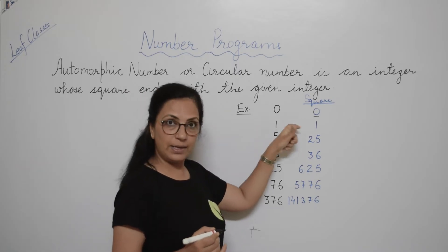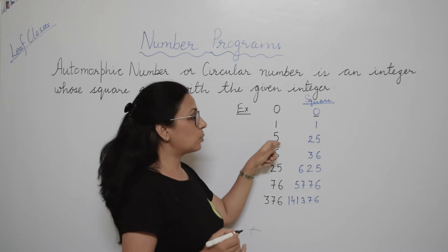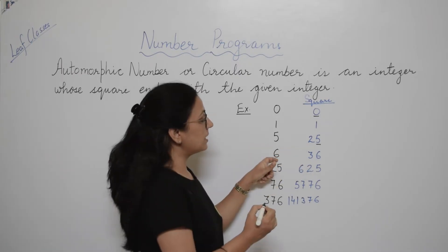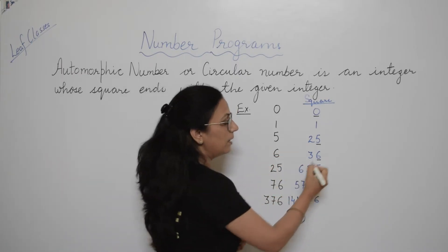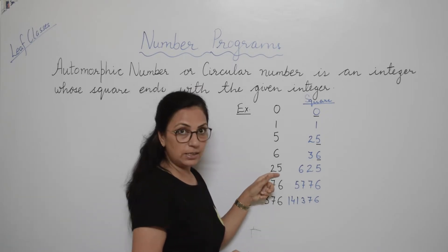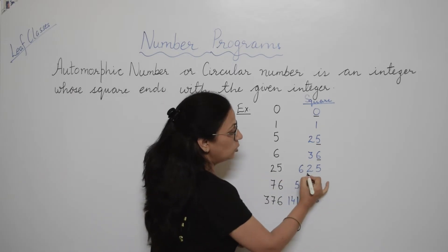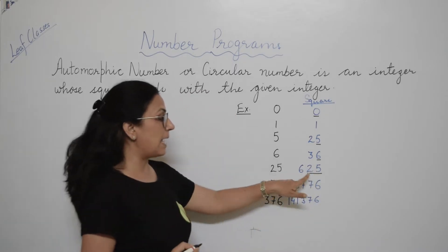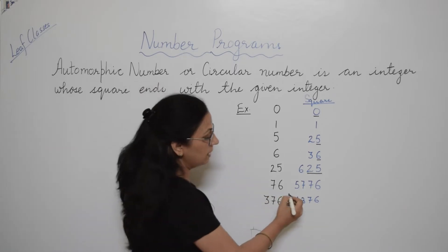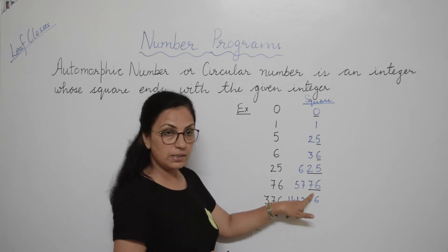For 1, square of 1 is 1 and the number is ending with 1. Square of 5 is 25 and in the end 5 is present. Square of 6 is 36 — the last digit is 6. Square of 25 is a 3-digit number, but 25 has 2 digits, so the last 2 digits of 625 are 25 itself. Similarly, square of 76 is 5776 and the last 2 digits are 76.